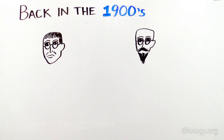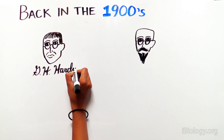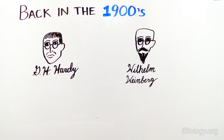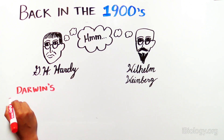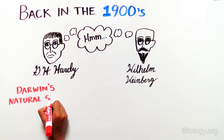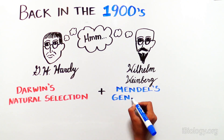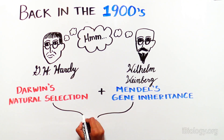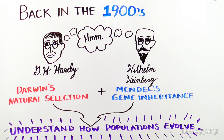Back in the early 1900s, a couple of scientists named G.H. Hardy and Wilhelm Weinberg started thinking that Darwin's theory of natural selection, survival of the fittest, and Mendel's ideas about inheritance of genes could be combined to help us understand how populations evolve.